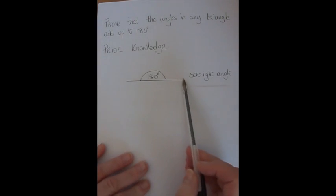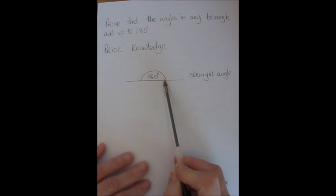On a straight line we have a straight angle which is 180 degrees. You can see that it's half of a circle which is 360 degrees.